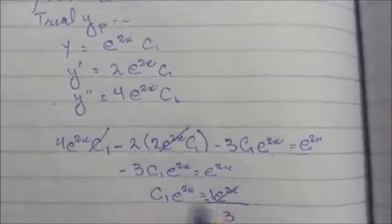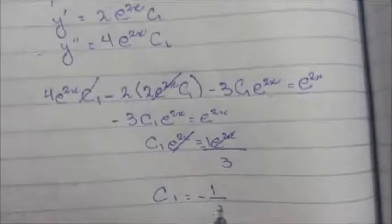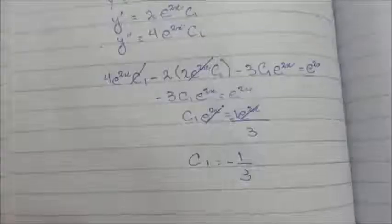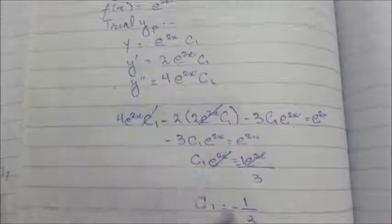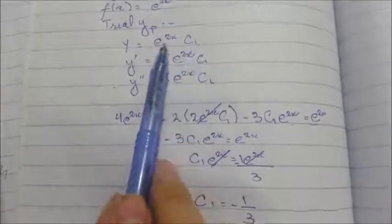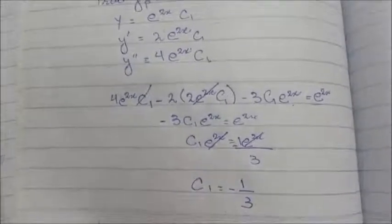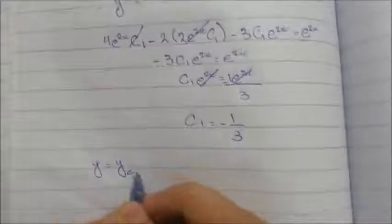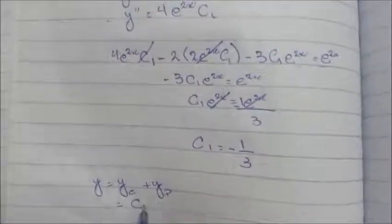So this and this will be cancelled, so c1 is equal to -1/3. So as we know that c1 is this, we will put this c1 here and multiply it with dx to get y, or in other words yp.